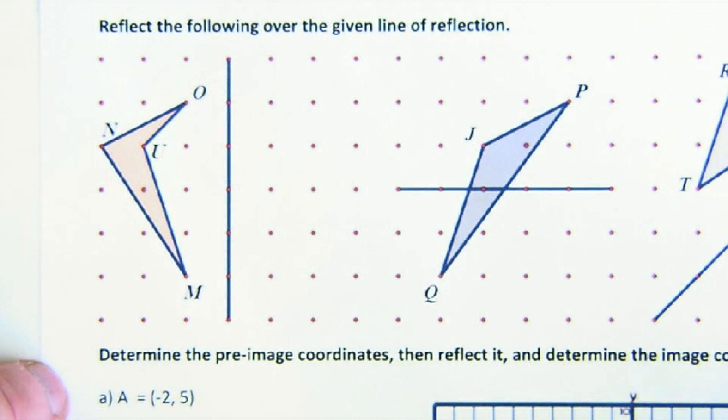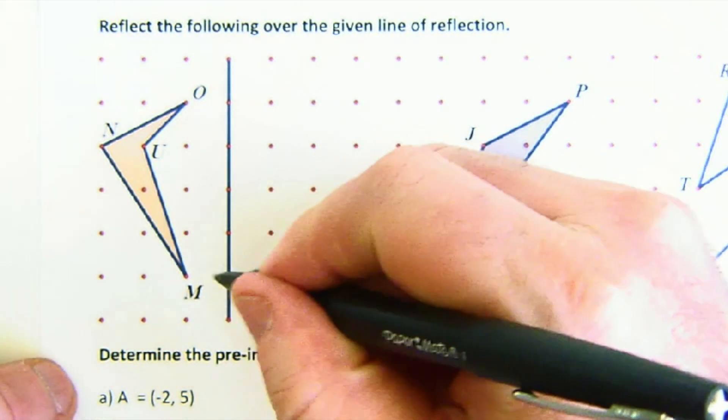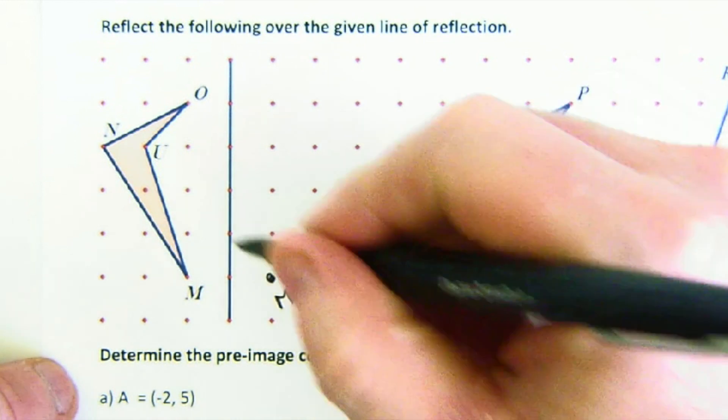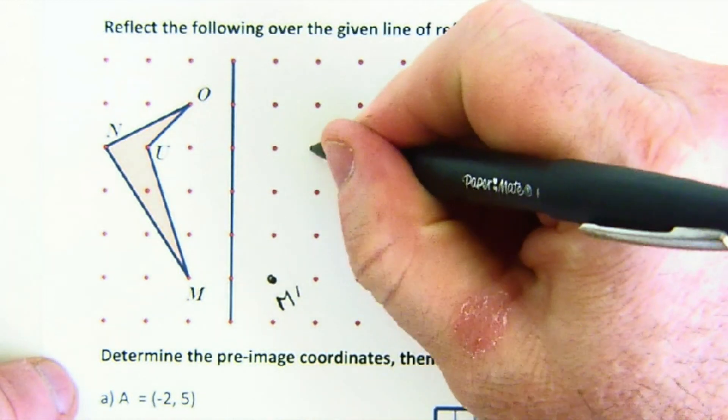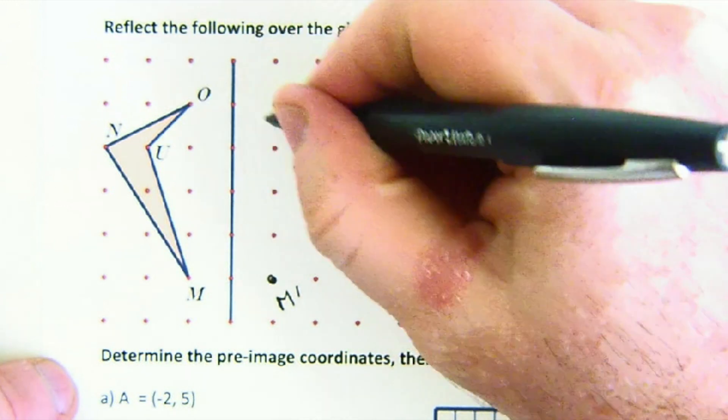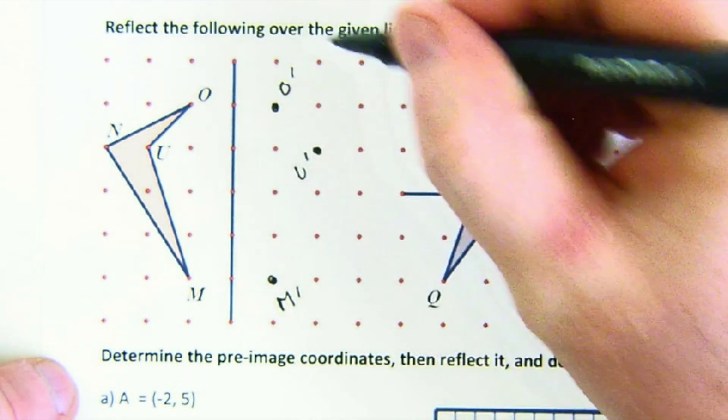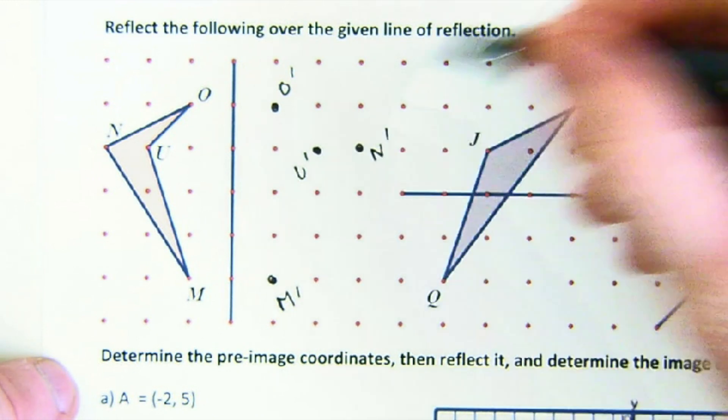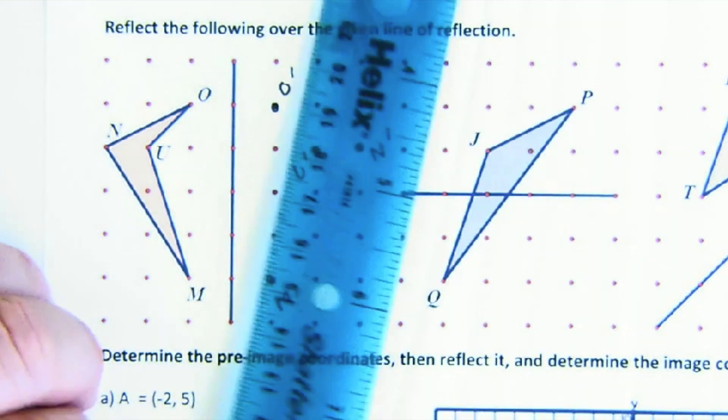You can just count distances. One away, so M prime would be also one away. U is two away, so U prime would be two away. O is O prime one away, and N is two away so N prime would also be two away. This allows very quick and simple reflections.